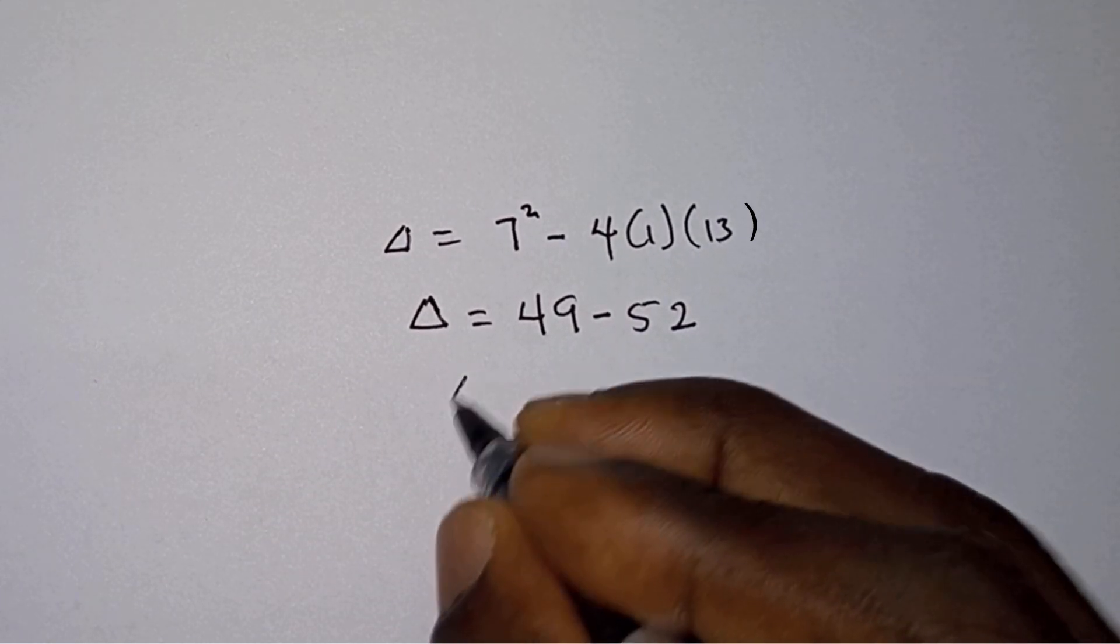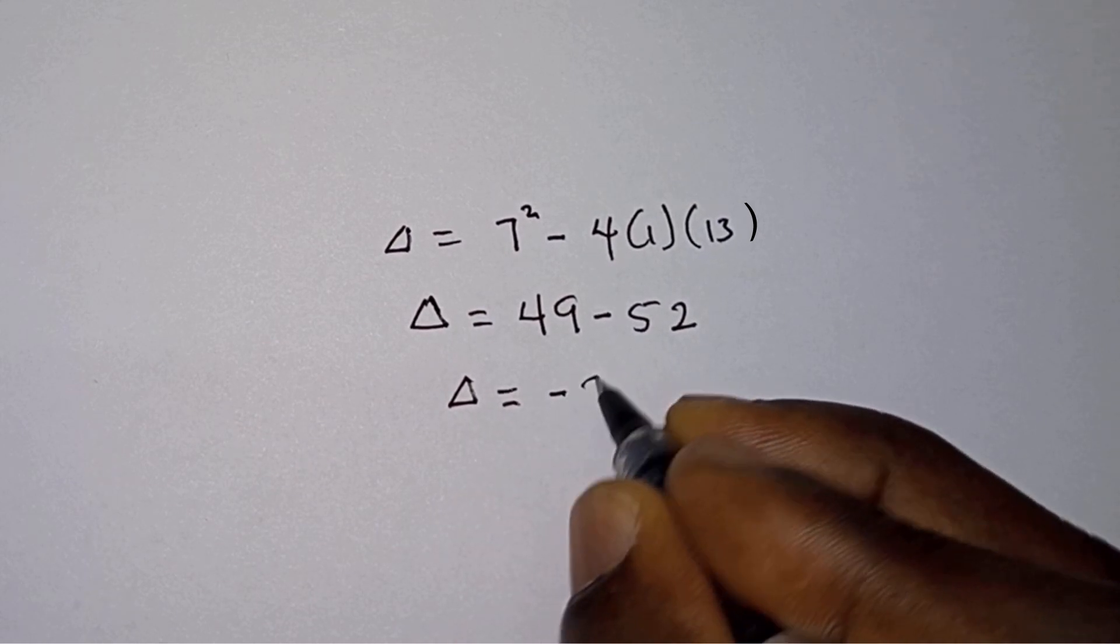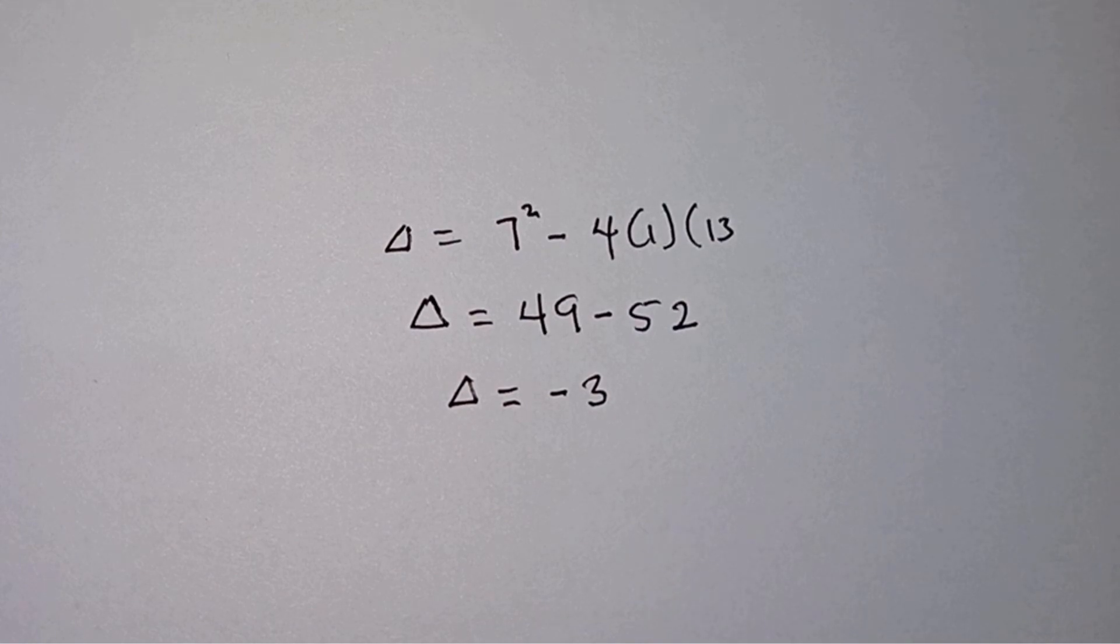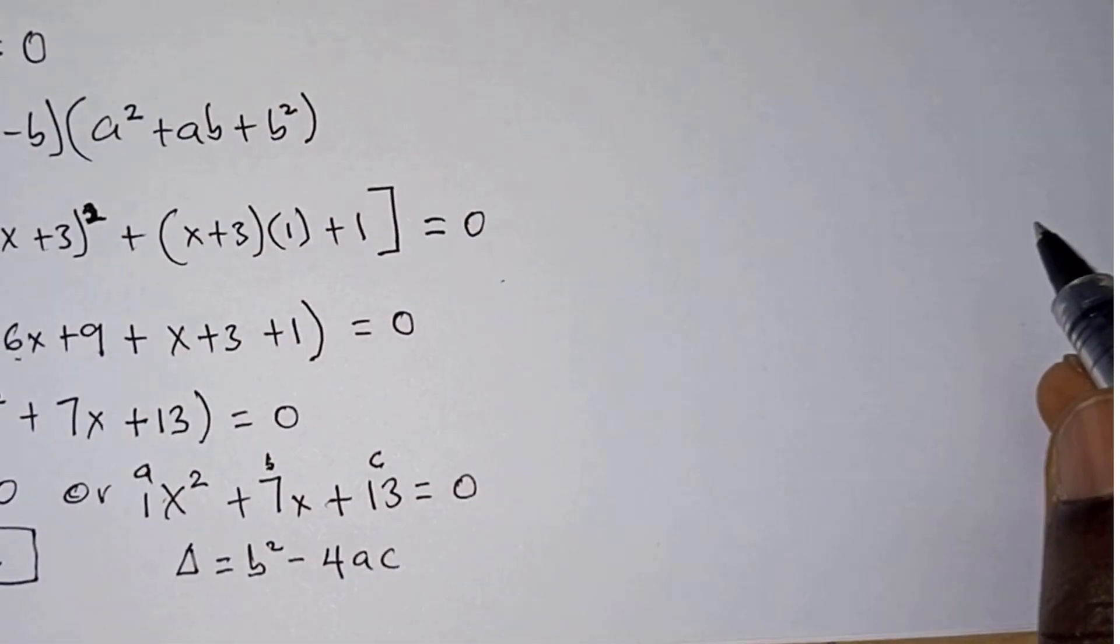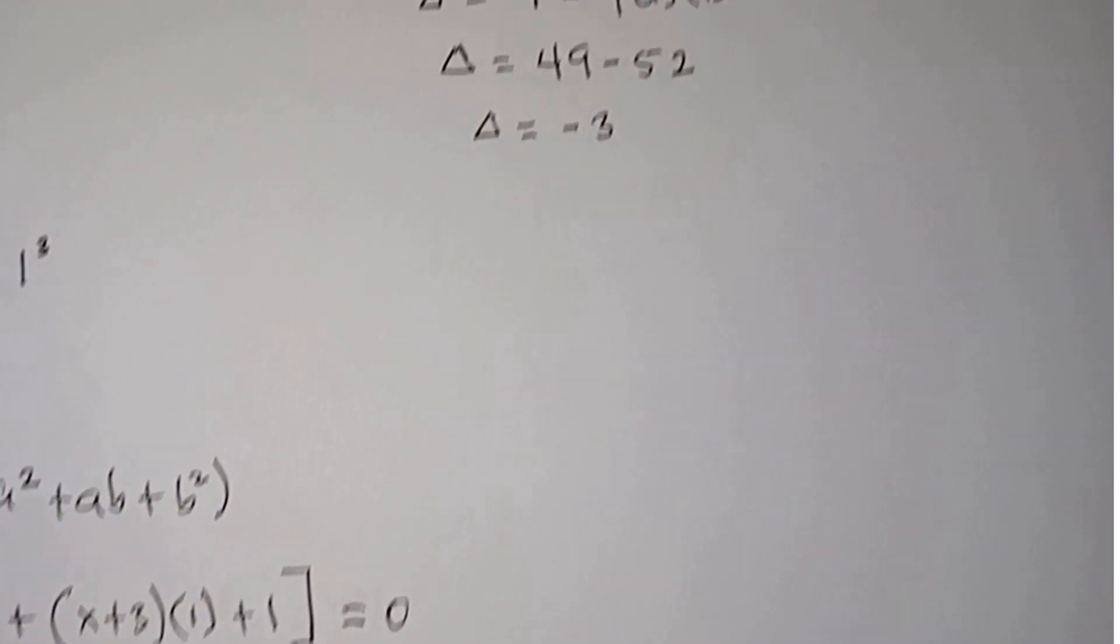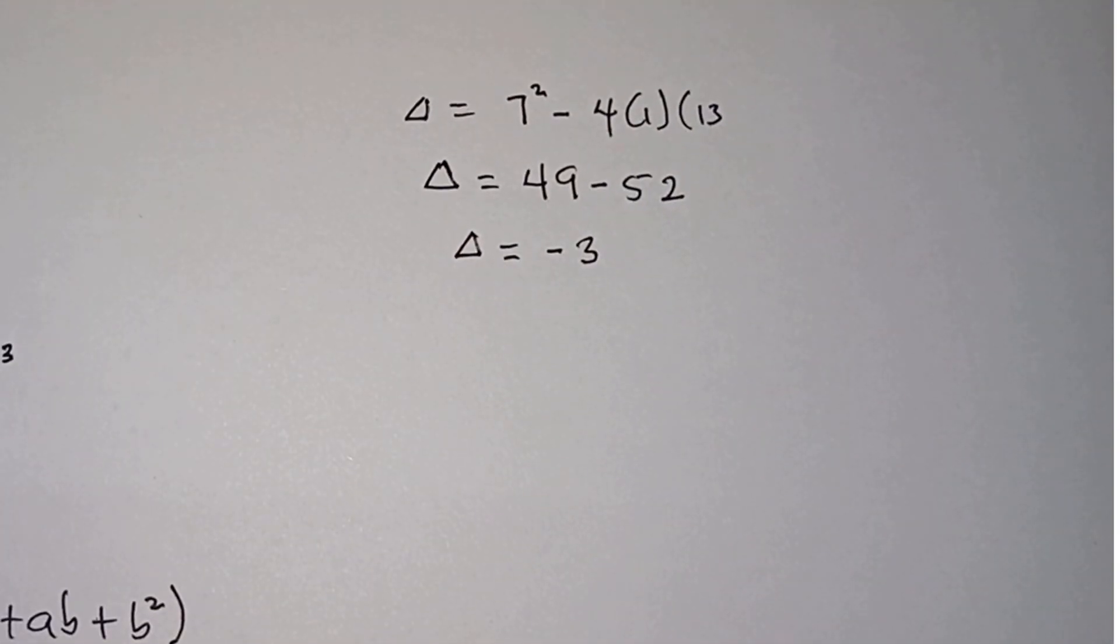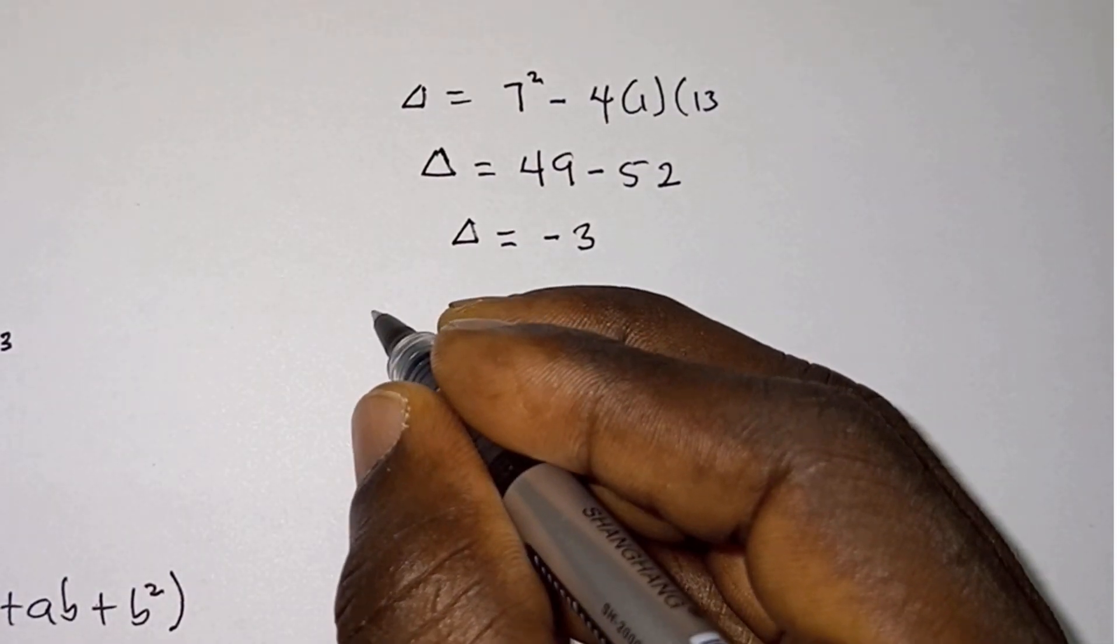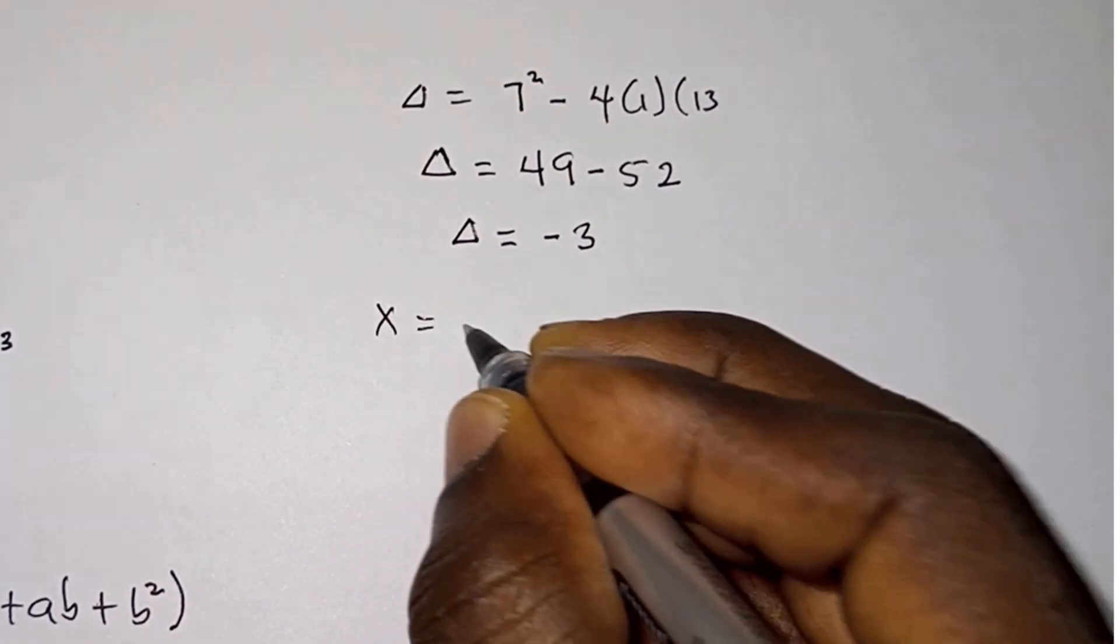Because delta is less than zero, it means that the quadratic equation over here has no real solution. But since the question didn't state that we should find only the real solution, let's go ahead and find the complex solutions.